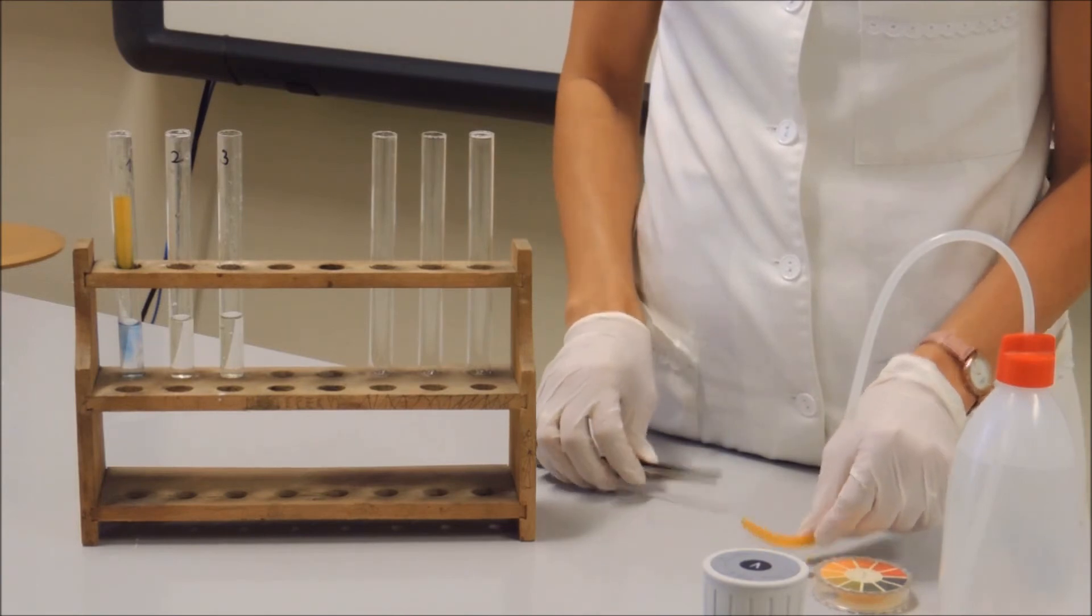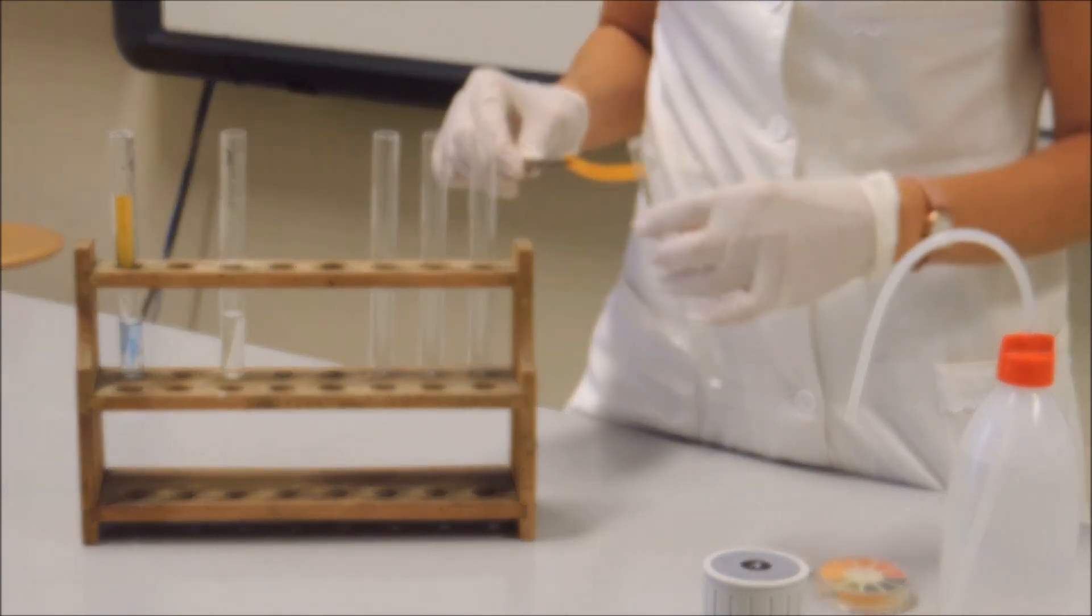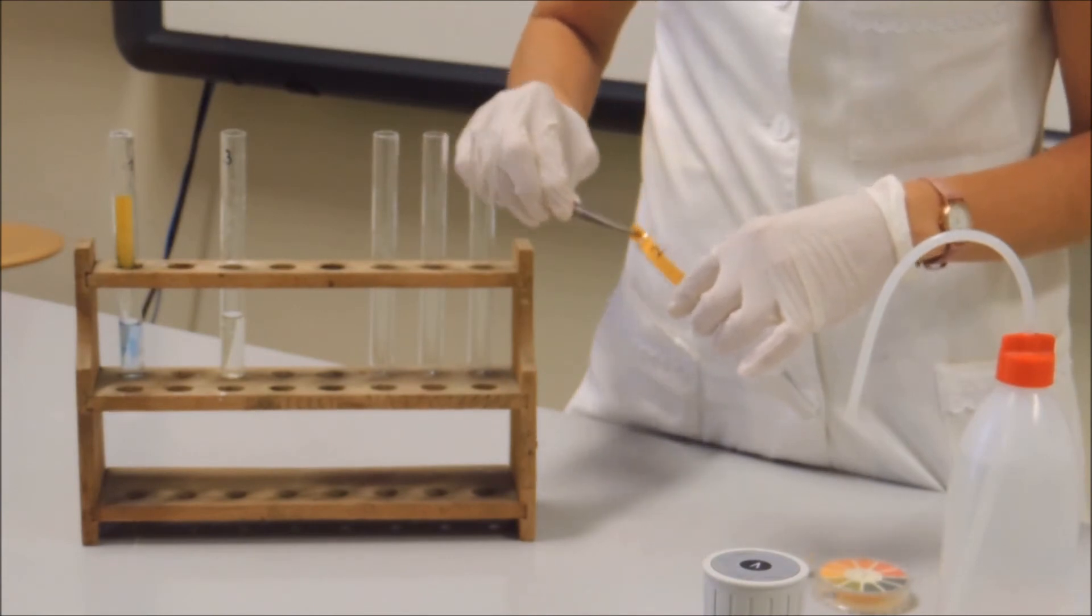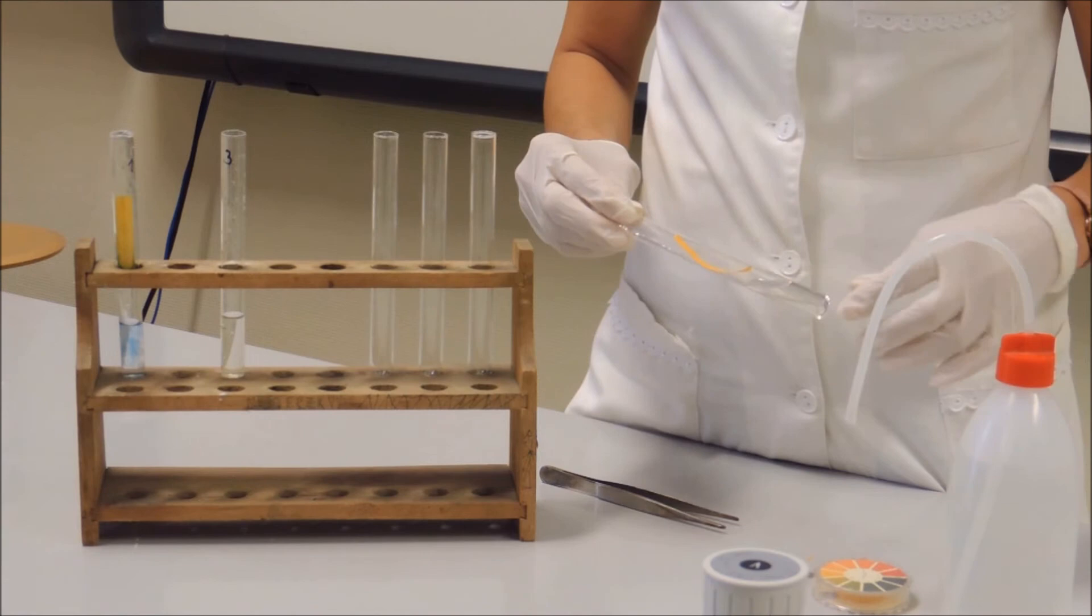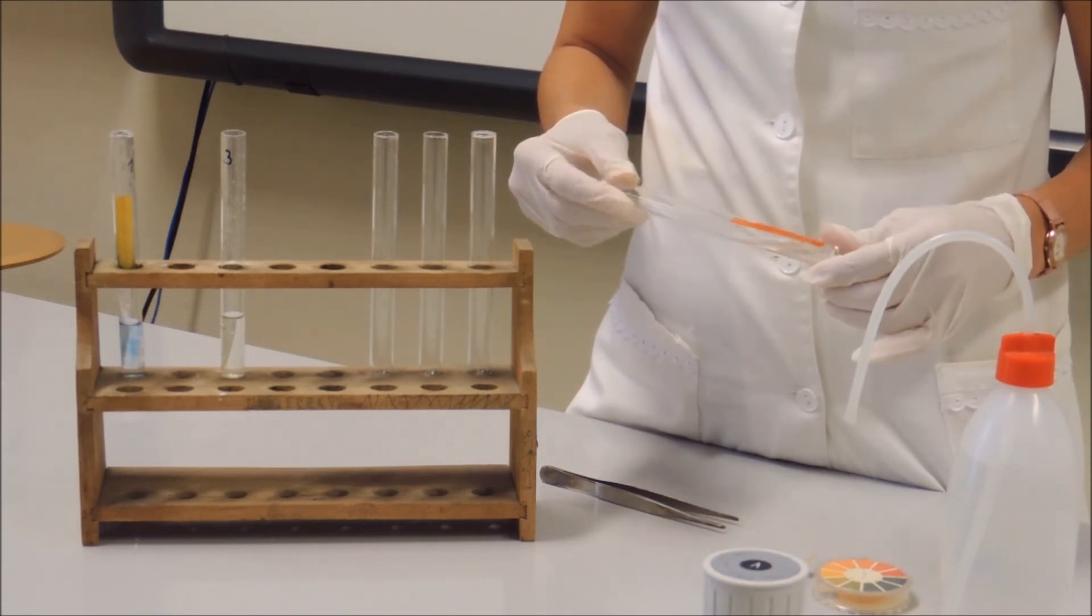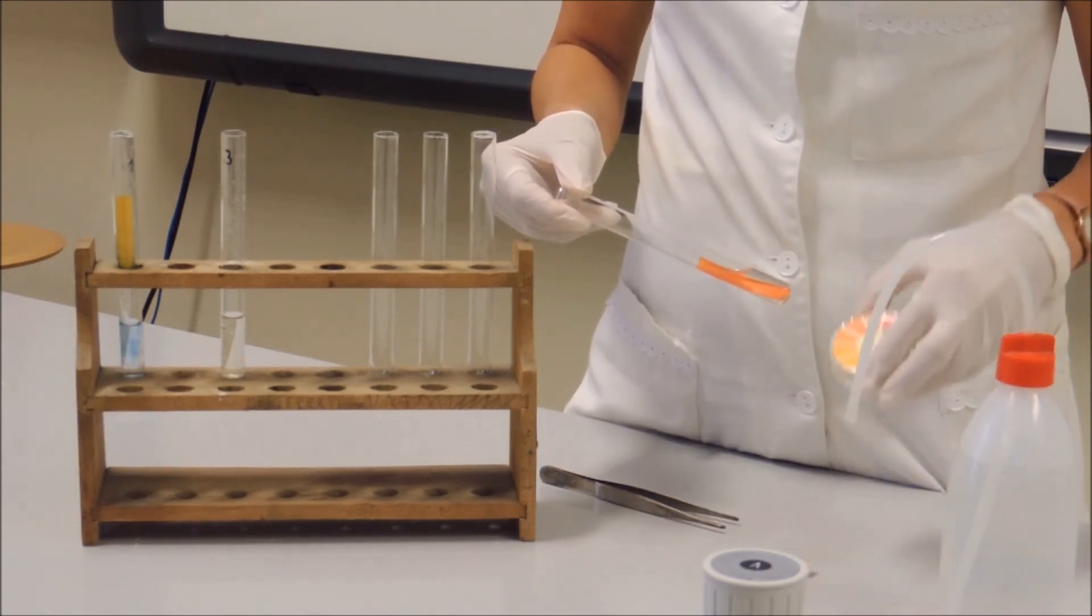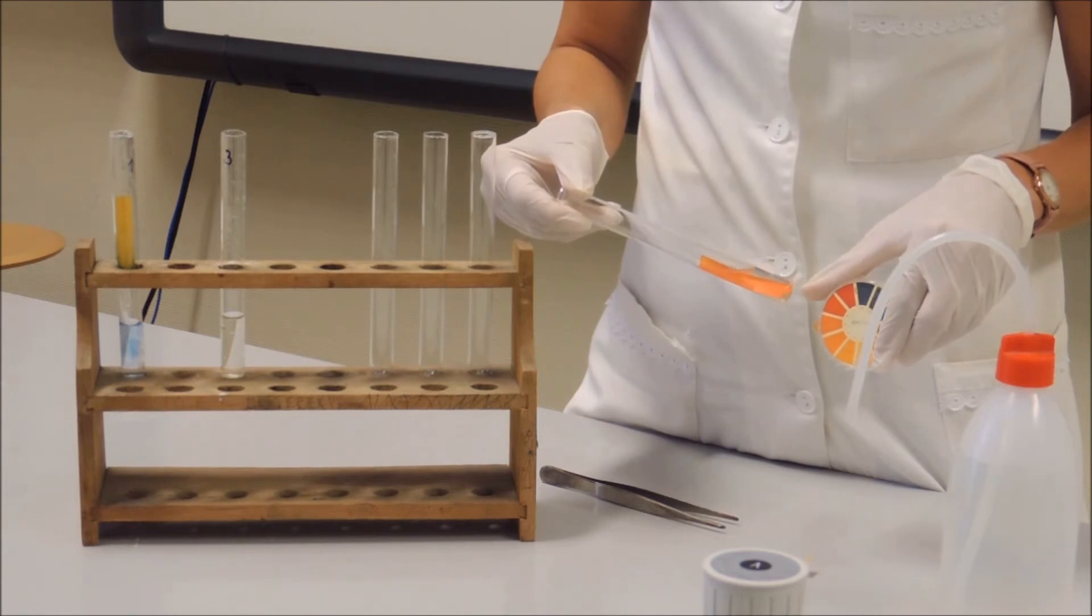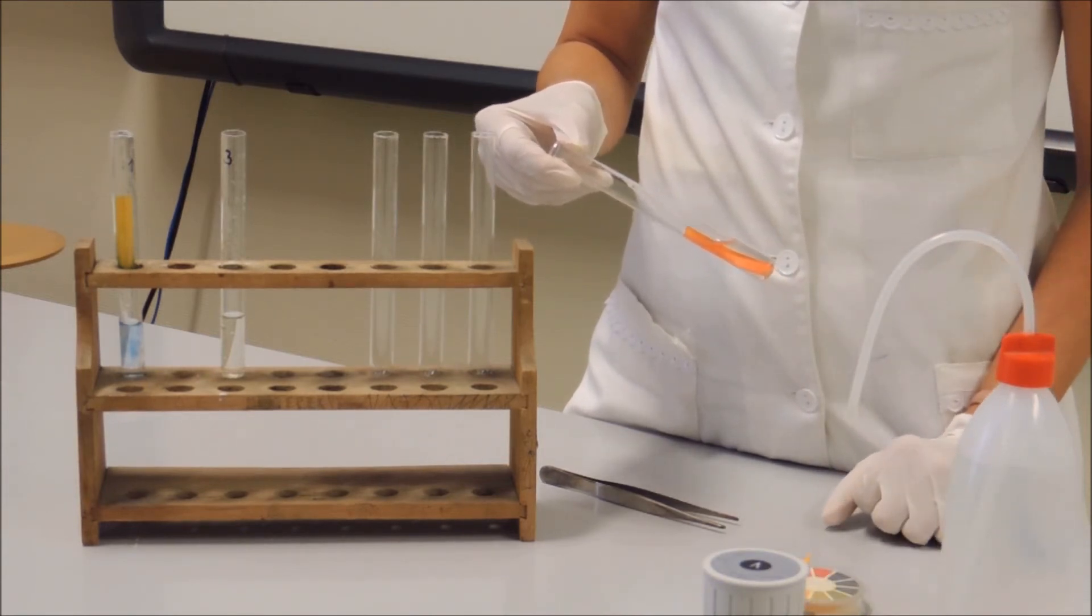Place the pH paper in the next test tube. The pH paper's color is reddish, the solution's pH is acidic, therefore the second test tube contains citric acid.